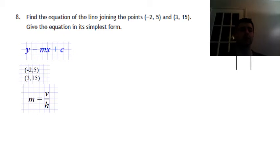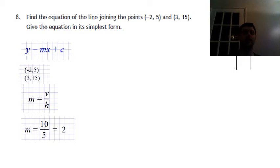So it will be 10 over 5, which answers is 2. So the gradient is 2. Again now we write that equation out as it is, y equals 2x plus c.